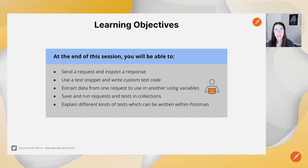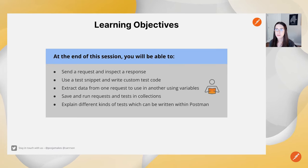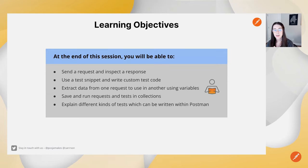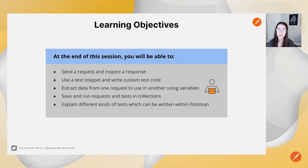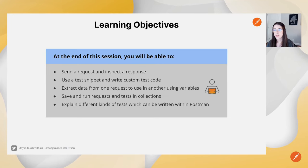By the end of this session, we hope you'll be able to discuss and share the following things with your team: sending a request and inspecting a response, using Postman workspaces and collections, using test snippets and writing custom test code, extracting data from one request and using it in another via variables, and saving and running requests and tests in collections — both manually and in a more automated way.